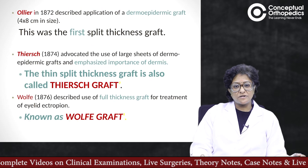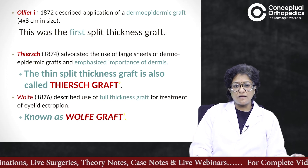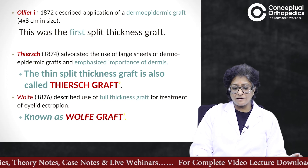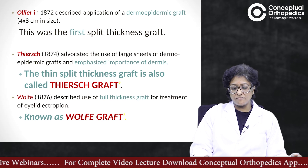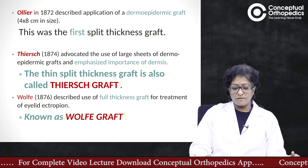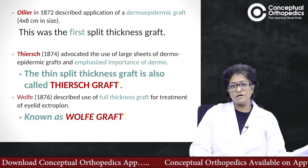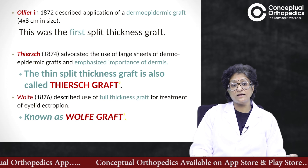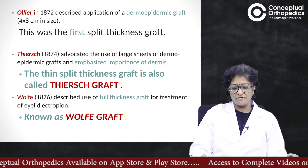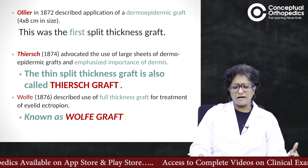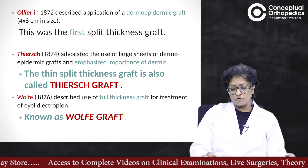You have to remember two surgeons: Professor Thiersch and Professor Wolf. The split thickness graft is also called the Thiersch graft, because Thiersch was the first to advocate using large sheets of dermo-epidermal grafts and emphasized the importance of retaining dermis. The full thickness graft is called the Wolf graft, because its use — including for ectropion — was described in detail by Wolf.